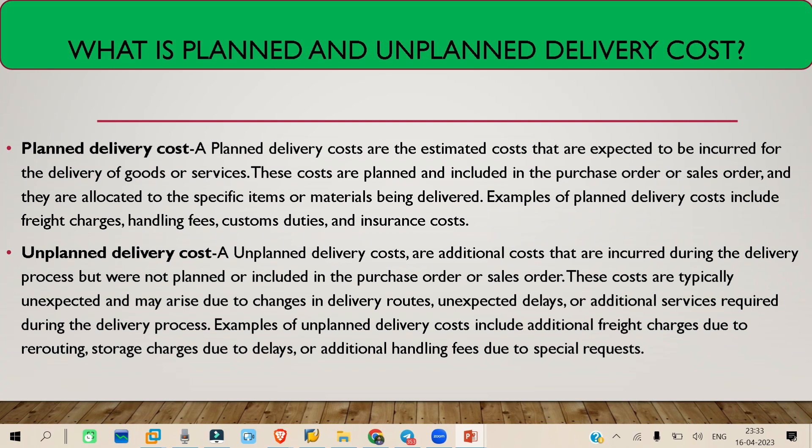Now, some costs are not mentioned in the purchase order, but your vendor is asking for some additional amount — say, delay charges because there are some delays happening, or some additional freight charges, or loading and handling charges. These kinds of things your vendor might ask you to pay. Since these are not planned in the purchase order, you can directly add this unplanned delivery cost in the invoice. Those are called unplanned delivery cost, because we have not planned for these charges in the purchase order.